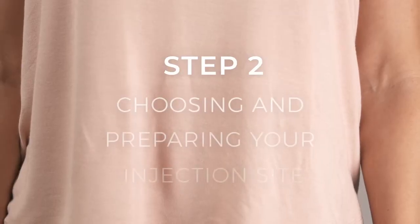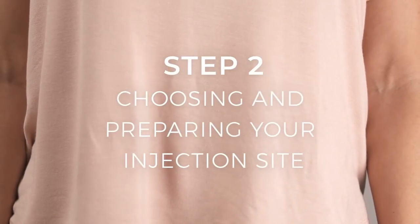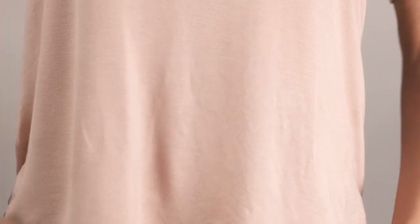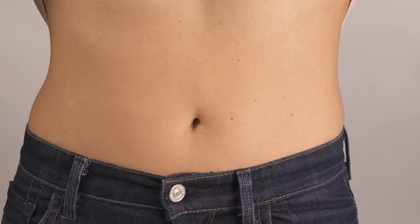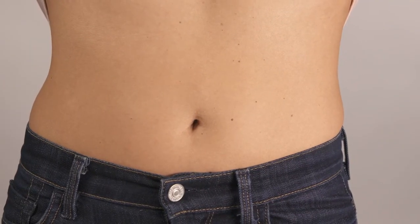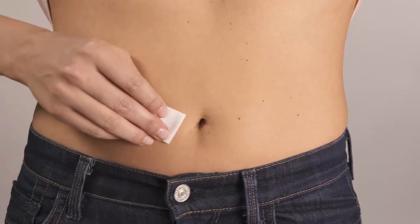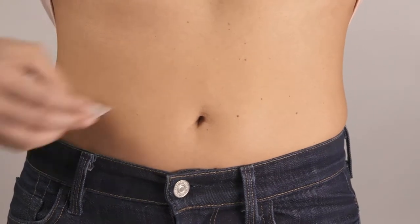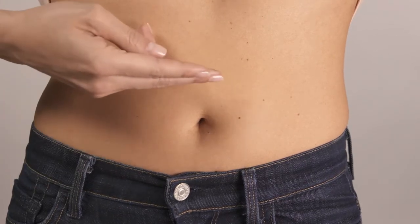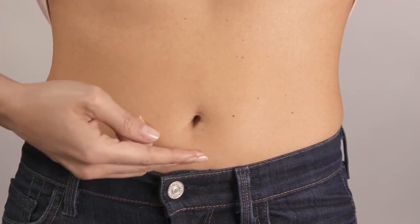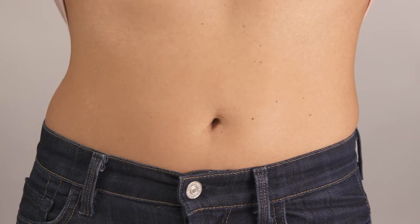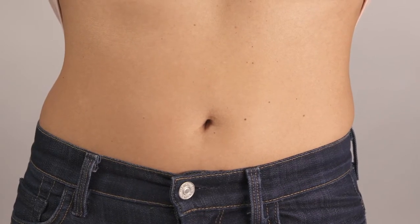On to step two, choosing and preparing your injection site. Select an area around your stomach for the injection, like your doctor or nurse showed you during your training, and wipe the skin with an alcohol pad to clean the site. A good tip is to choose a different injection site each time you give your injection. This will help to reduce potential redness, irritation, or other skin problems.